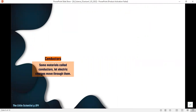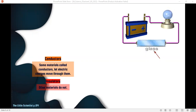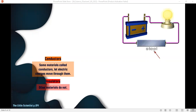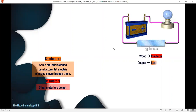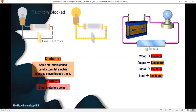Some materials let electricity pass through, some others do not. Here we placed different materials: wood — the light bulb is off, so the current isn't moving; copper — light bulb on; glass — off; steel — on. Some objects let electricity pass through, which is what makes the light bulb light up, like copper. Glass is an insulator, steel is a conductor, and wood is an insulator. If an object is a conductor, it lets electricity pass through.